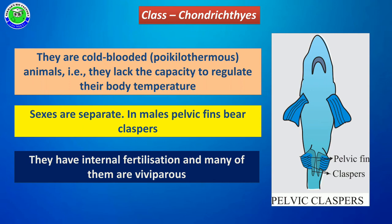During sexual reproduction, the male individual releases male gametes into the female individual, so fertilization takes place inside the female organism — this is internal fertilization. After fertilization, the zygote develops inside the female individual into an embryo and then a young one. The young one is directly delivered outside the female individual; such a character is called viviparity. Most Chondrichthyes members are viviparous in nature.